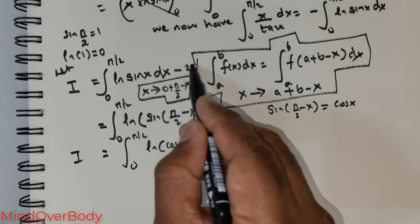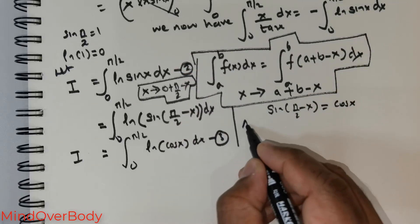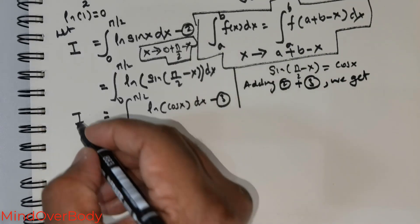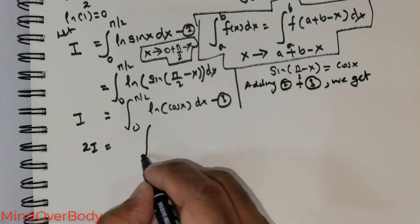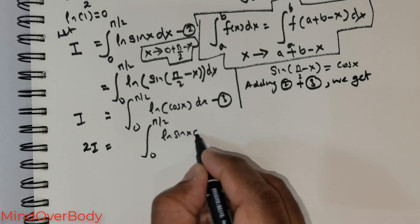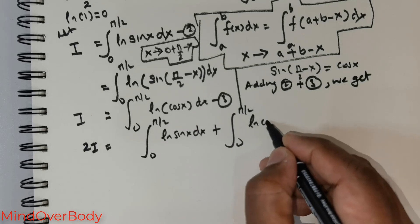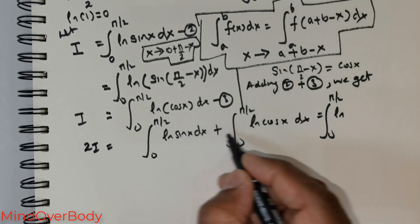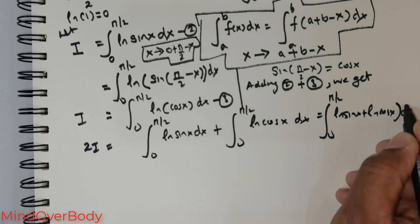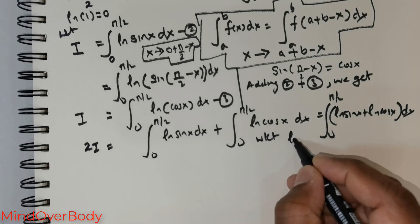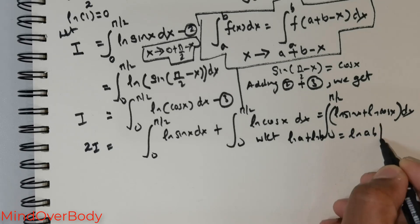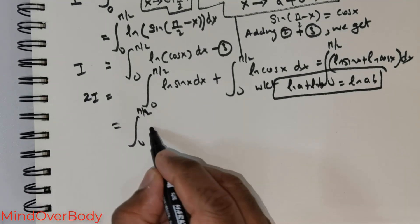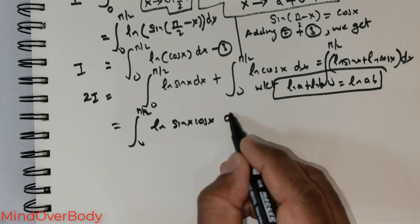Adding the two expressions for i, we get 2i = integral from 0 to π/2 of ln(sin x) dx plus integral from 0 to π/2 of ln(cos x) dx. This combines as 2i = integral from 0 to π/2 of [ln(sin x) + ln(cos x)] dx = integral from 0 to π/2 of ln(sin x · cos x) dx.